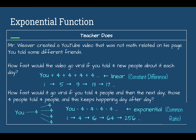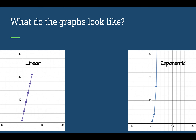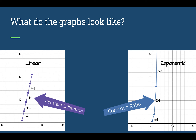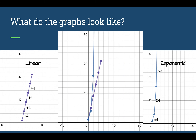Let's look at what the graphs look like. On the left we have a linear function — adding four each time. On the right we have an exponential function — multiplying by four each time. Both are increasing, but the exponential one is increasing a lot quicker. If we put them on the same graph, it starts where the linear one is actually ahead — the purple line is above the blue — but pretty quickly the blue line takes over.